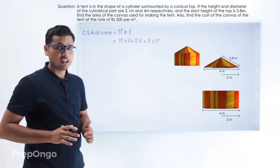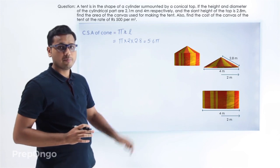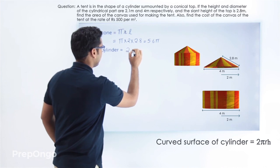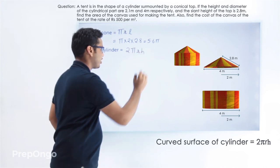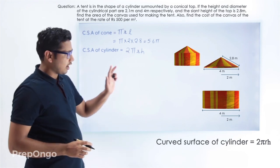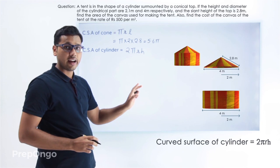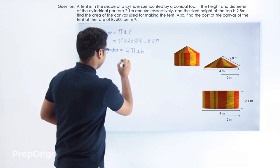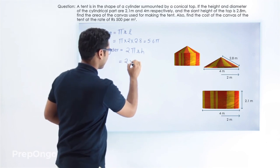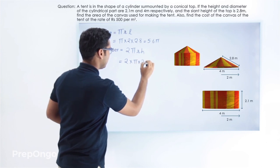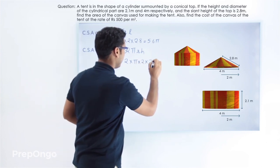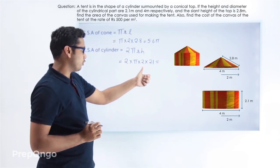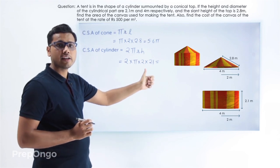Similarly, we can find out the curved surface area of the cylindrical part. This is 2πrh. Let's put in the values: r is 2 meters and the height of the cylinder is 2.1 meters. So this will be 2 × π × 2 × 2.1, which comes out to be 8.4π.